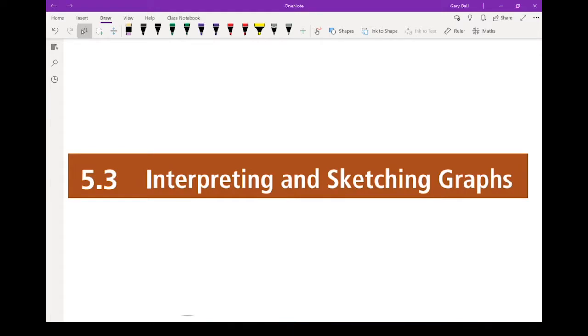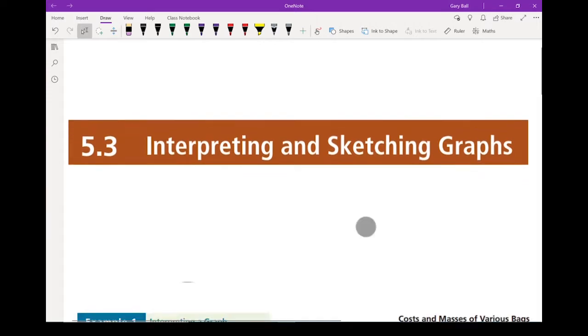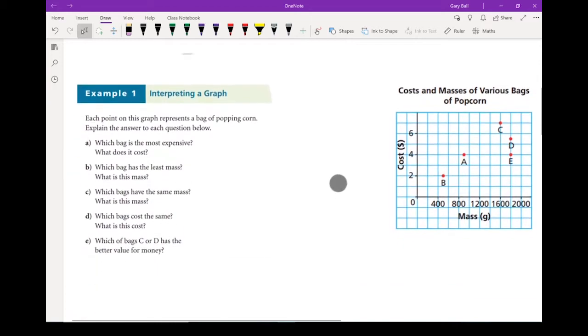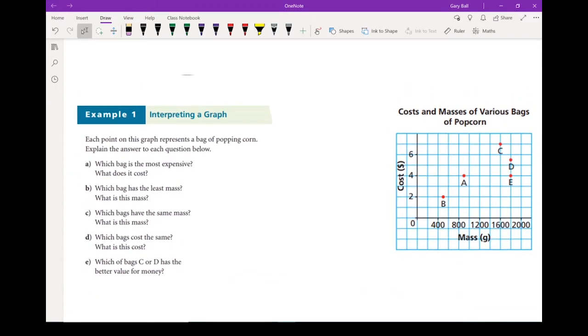5.3 Interpreting and Sketching Graphs. This is all about looking at a graph of information and finding the story out of it, or vice versa, starting with the story and coming up with a graph that describes it.